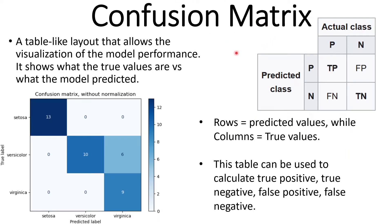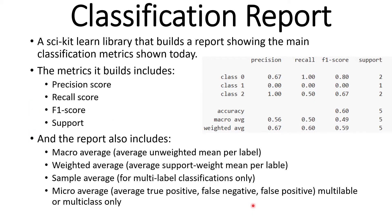Confusion matrix. A confusion matrix is a table-like structure that allows visualization of a model's performance — it shows the true values versus what the model predicted. For a binary class, the rows represent predicted values and the columns represent the true values. This table can be used to calculate true positive, true negative, false positive, and false negative, which in turn are used to calculate precision, recall, and subsequently F1 score. Go ahead and watch the dedicated video on precision, recall, and F1 score for more detail.